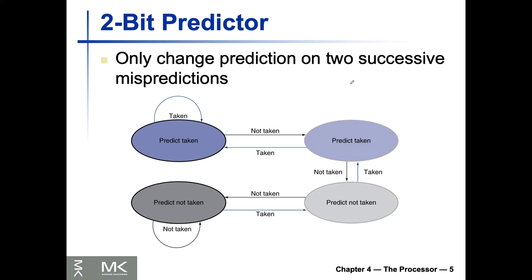The two-bit predictor only changes predictions on two successive mispredictions. On the first misprediction you don't set it again right away, so after finishing the loop you still have the same prediction. In this paradigm we can handle two successive mispredictions. Say it was set as 'predict taken' — either we take it all the time and everything is good, or that was the first misprediction: it was set to taken but we didn't take it. Now it's two-bit, so we go into a state that is still 'predict taken'.